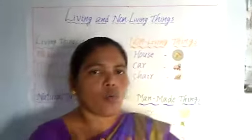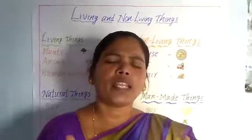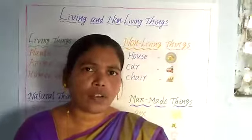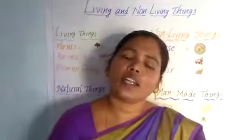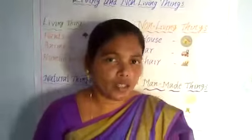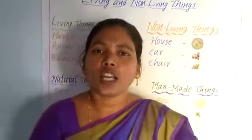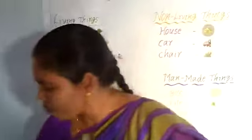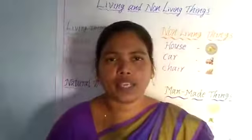See children, once observe your surroundings — so many things are there, yes or not? They can be living things and non-living things. What are those living things and non-living things? Living things are plants, animals and human beings.